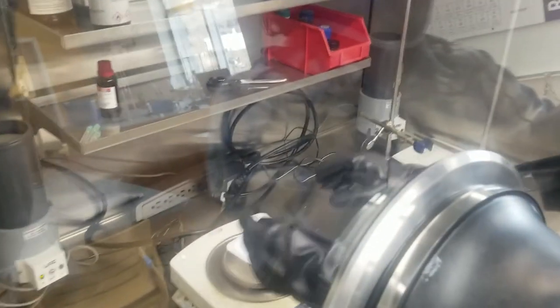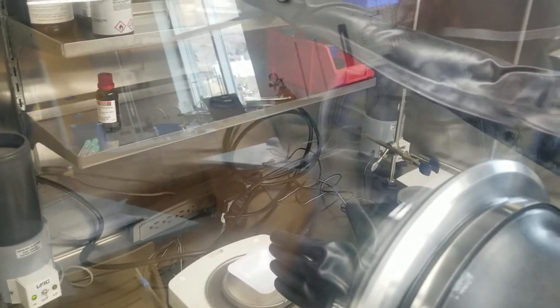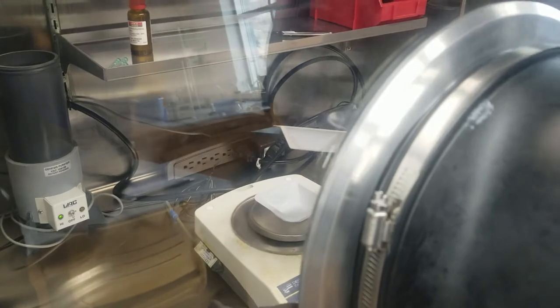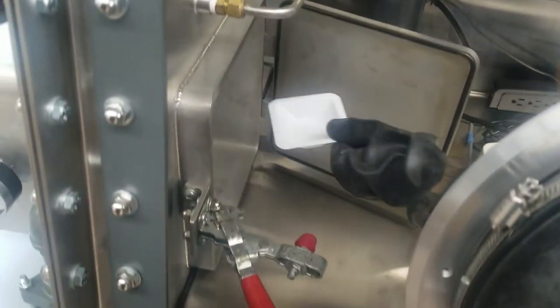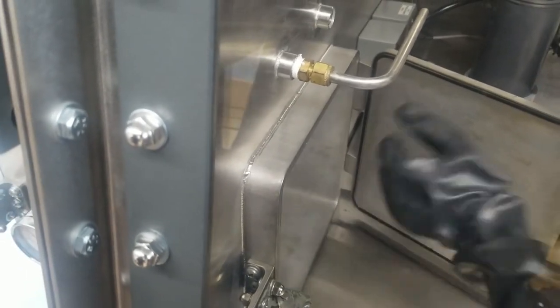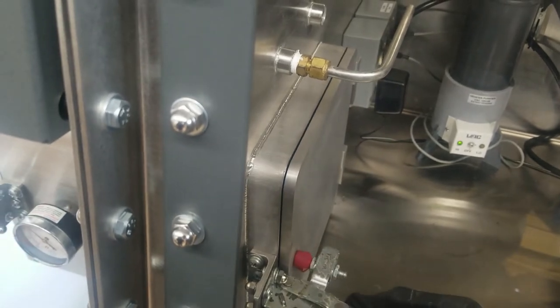Okay, now we are going to show you how to take something out of the glove box. We are going to take out this weigh boat that we actually just put in. So all you're going to do is you're going to open up this door here, just like we did to put it in. And we're going to put the weigh boat into the antechamber.